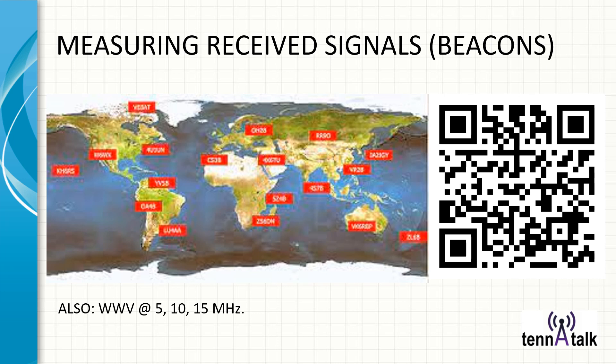On the receive side, there are beacons all over the world. The QR code links to a website listing beacons sending signals on different schedules from different locations that you can hear. On top of that, you can always tune in the reliable WWV at 5, 10, and 15 megahertz. That way, you can get an idea of the signal strength you're receiving from different locations at different times of day, and look at the effect of your receive antenna.